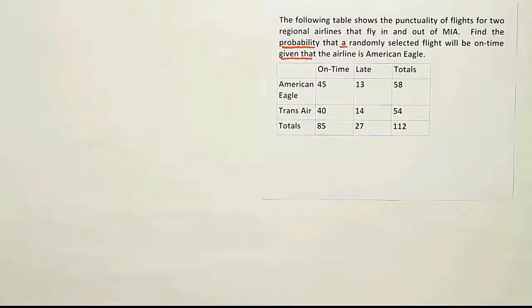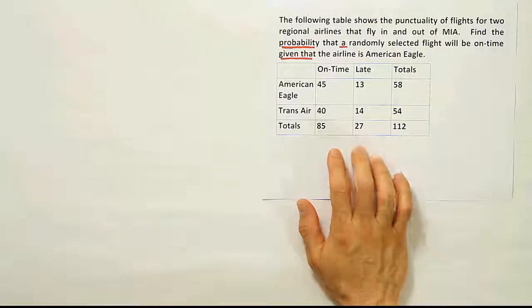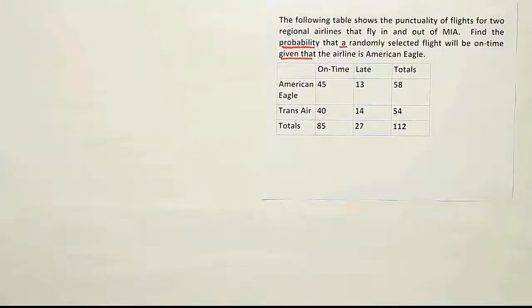Okay, so now that we know it's conditional probability and we have the data laid out in the table like it is here, we should basically focus only on the given that condition, and then from there isolate the row or column that corresponds to that condition.